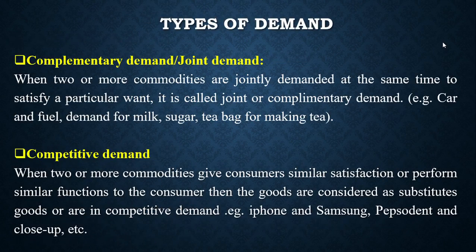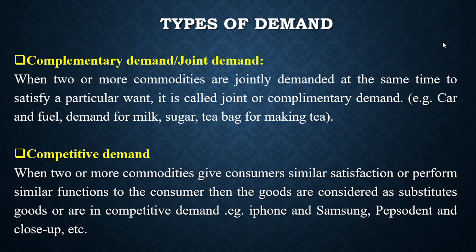We also have types of demand. We have complementary or joint demand — when two or more commodities are jointly demanded at the same time to satisfy a particular need, it is called joint or complementary demand. Examples are car and fuel, demand for milk, sugar, and tea bags for making tea — they are all used together.